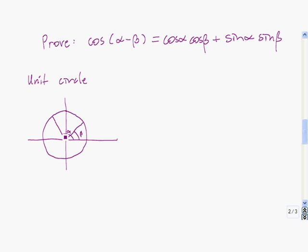This angle alpha minus this angle beta leaves this angle left, so this angle here is the angle alpha minus beta. Since this is the angle alpha, we know the x-coordinate on the unit circle is the cosine of the angle, so that x-coordinate is cosine of alpha. The y-coordinate of the point on the unit circle is the sine of the angle, so this is sine of alpha.